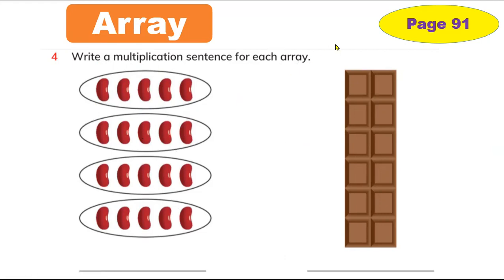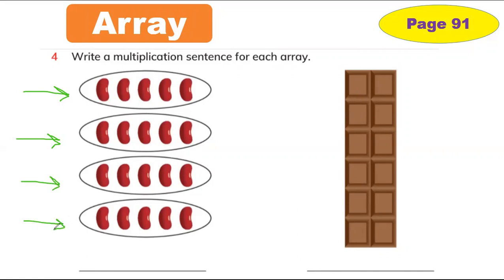So here are the arrays — the beans and the chocolate. It's going to be so easy with pictures to understand the multiply. First I'm going to use my pen. Let's do the first question: beans. Let's look at how many lines. So here is the first line: one, two, three, and four. How many lines? One, two, three, four.